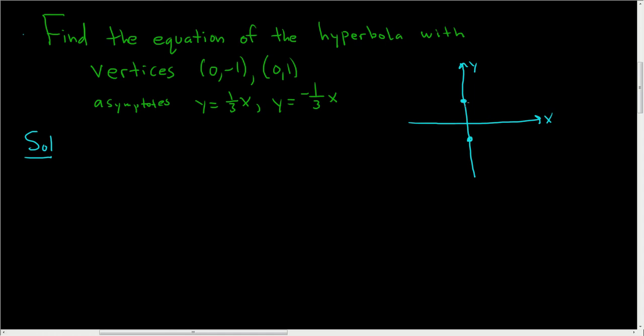So the vertices lie on the actual hyperbola. So the hyperbola is going to open up and down. Now we have some information about the asymptotes.